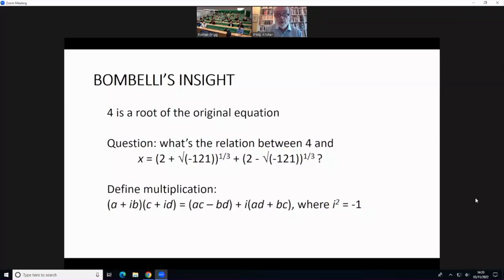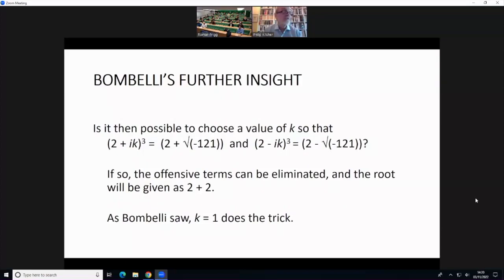So he defines multiplication for what we would call complex numbers. He then asks, is it possible to choose a value so that these two expressions, these two funny expressions, when added to one another, will yield 4? And he sees that what he needs is to choose a value of k, so that 2 + k times the square root of -1 is 2 + the square root of -121, and similarly for the complex conjugate. If he can do that, the offensive terms go away, and you get 2 + 2, which is, of course, 4.